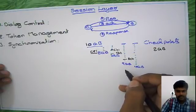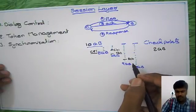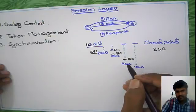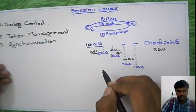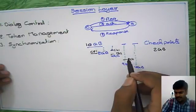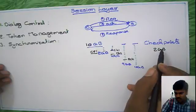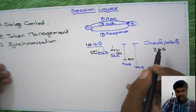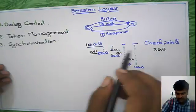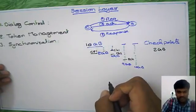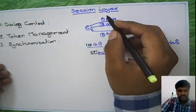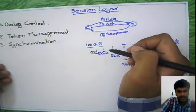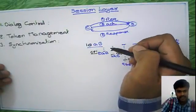Even if you lose the connection in between, after some time you are able to get the total file. That's why you need to maintain checkpoints, which is what we call synchronization. This is one of the functionalities of the session layer.